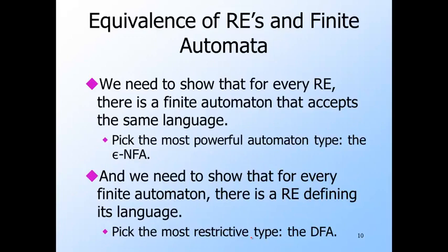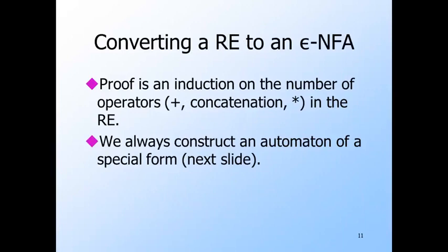We're going to show that regular expressions define exactly the regular languages. We already have three equivalent representations: DFAs, NFAs, and epsilon-NFAs. We need to show that for every regular expression there is some automaton that defines the same language — for this we'll use the most powerful variety, the epsilon-NFA. For the other direction, we show every regular language is defined by some regular expression, starting with the most restrictive variety, the DFA. We'll begin with converting a regular expression to an epsilon-NFA; the proof is an induction on the number of operators.